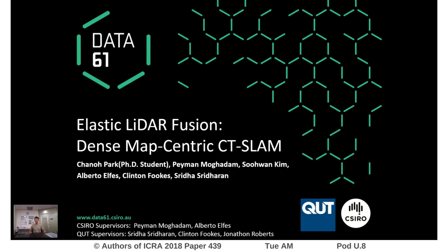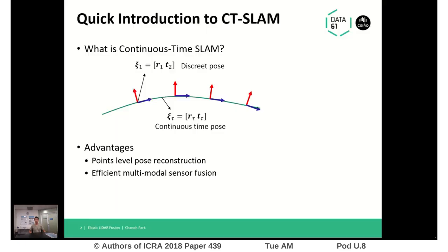As its title says, we try to combine a map-centric approach with continuous time SLAM. I'll briefly introduce what continuous time SLAM is. The main difference between conventional discrete time SLAM and continuous time SLAM is that continuous time SLAM utilizes and optimizes a continuous time trajectory, which is a function of time. The main two advantages are that measurement-wise pose rate construction is possible, which is extremely useful for handling motion distortion problems, and multiple sensor fusion is very easy in this framework.